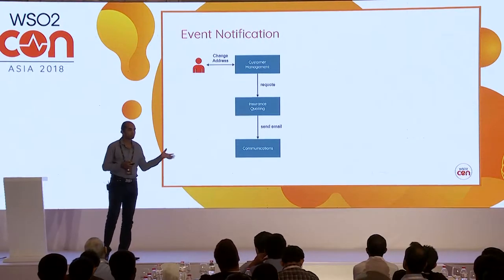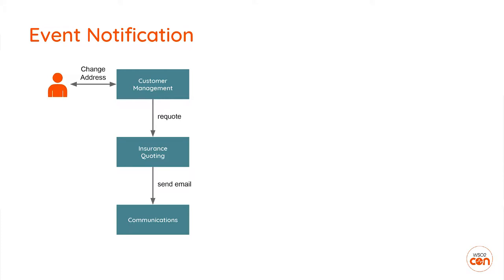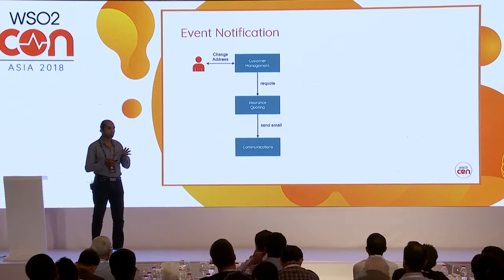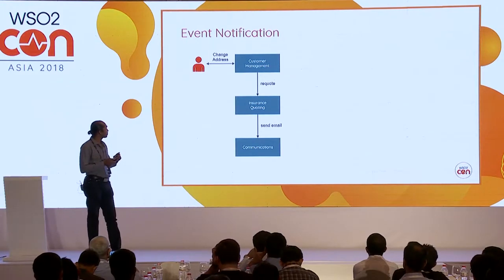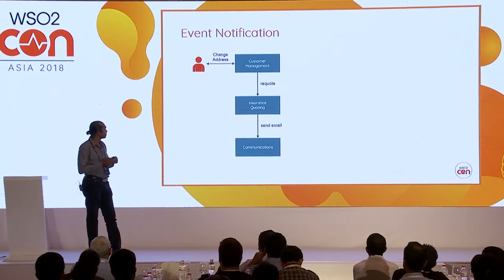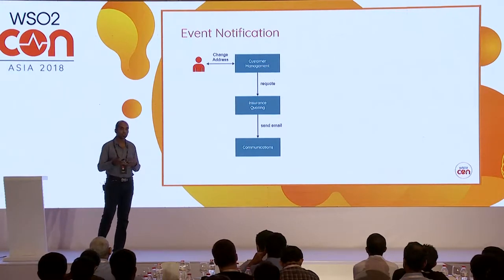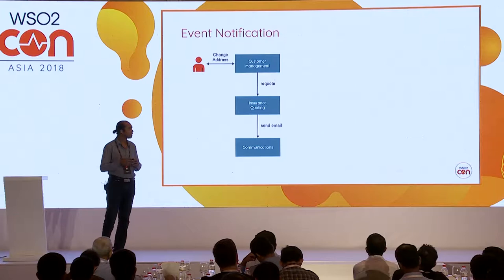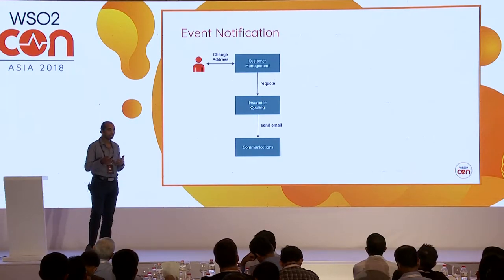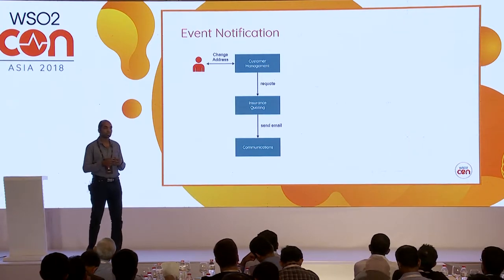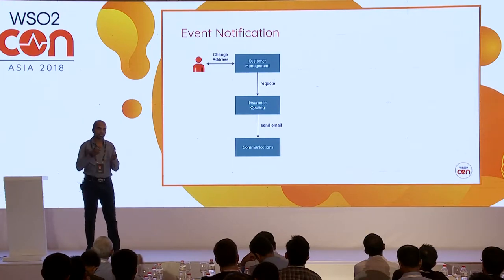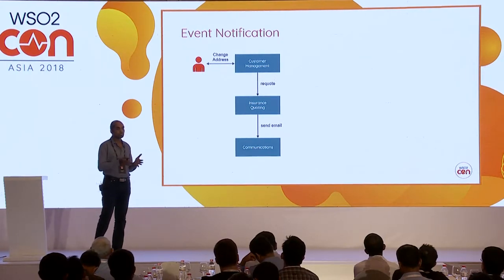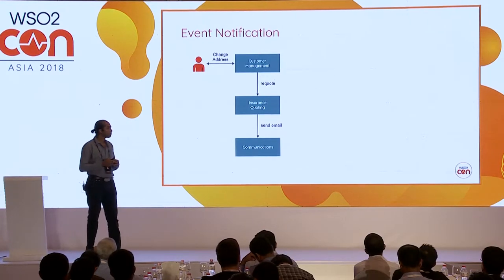Let's take a look at this in enterprise application domains. To explain this, I'll take a simple example. This is a system in an insurance company — there's a customer management system, an insurance quoting system that calculates premiums, and another system for communication, sending out emails to customers. In this use case, a user changes their address in the customer management system. If you know about insurance, changing an address requires recalculating premiums, because where you live affects your premium.